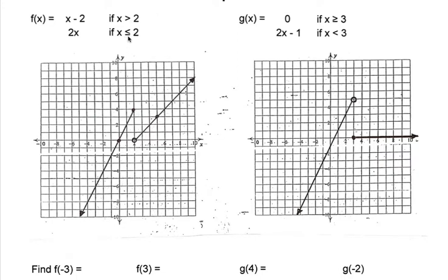And I'll put a solid dot there. That's because it includes it because of the equal to sign under the less than. Now, then you know as it goes to the left, because it's less than, it's going to have a slope of 2.